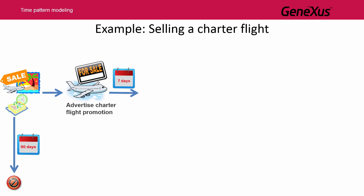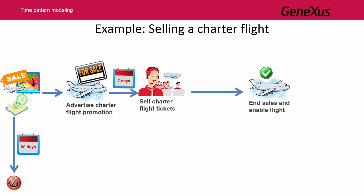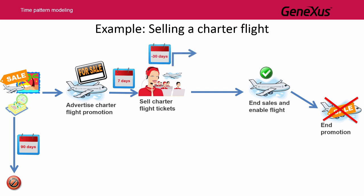One week after launching the promotion, tickets are made available for sale. When all the tickets have been sold, the flight is enabled, which implies that this flight will actually operate, and the promotion is removed from the various media where it was published. As the flight tickets are sold, certain actions are taken as time goes by. For example, if the sales process reaches 30 days and not all the seats have been sold yet, a warning is triggered that starts a sub-process to increase the promotion advertising in the various sales channels.